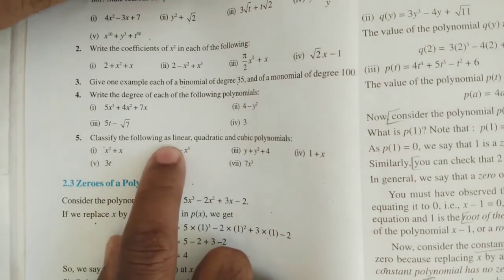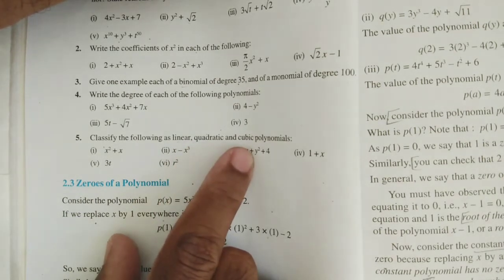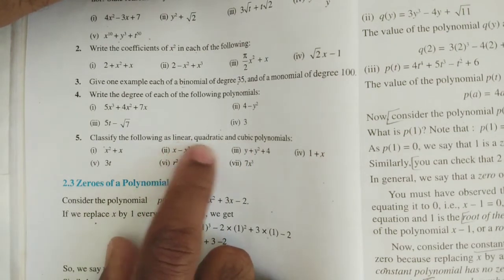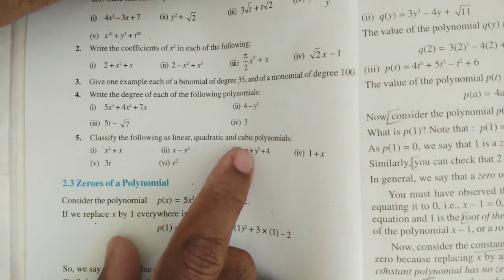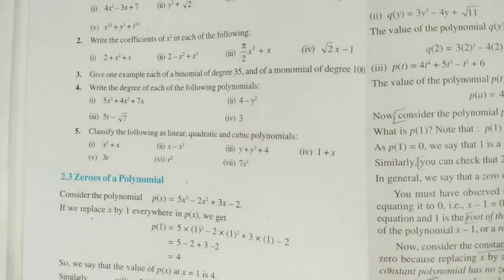Where I know that, what is a linear polynomial? An expression, a polynomial which has degree 1 is called linear. Degree 2 is quadratic. Degree 3 is cubic. While we are checking the polynomial is linear or quadratic or cubic, we should not bother about terms. Only we can focus on the power here.